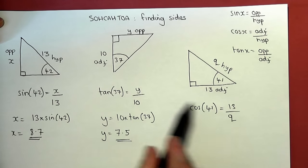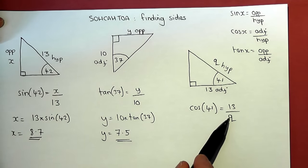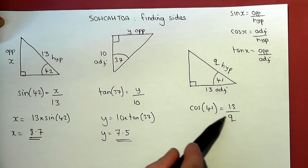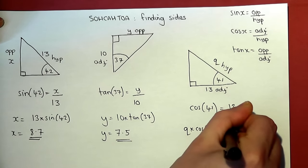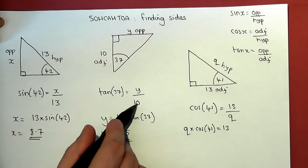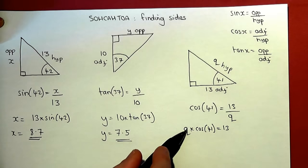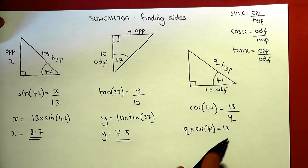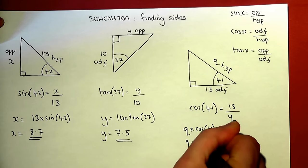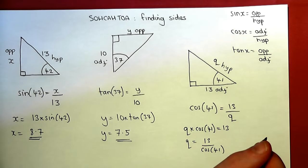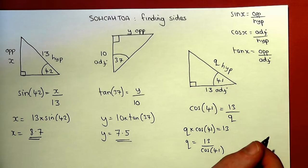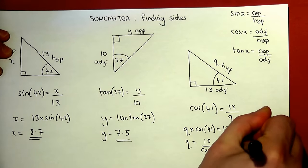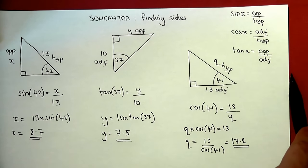This is a bit different to the first two equations because the unknown is now below the fraction. So rearranging requires two steps. First, multiply both sides by q, giving q times cos 41 equals 13. Then divide by cos of 41 to find q. So q equals 13 divided by cos 41. I input that into my calculator: 13 divided by cos of 41, and I get 17.2. So q has a length of 17.2.